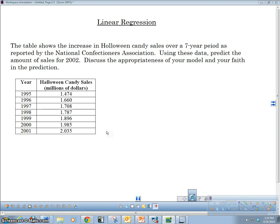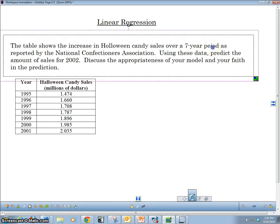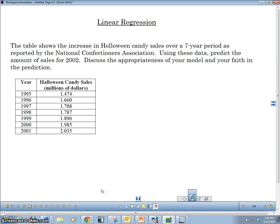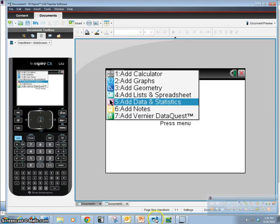So let's take a look at a problem here. The table shows the increase in Halloween candy sales over a seven year period as reported by the National Confectioners Association. Using these data, predict the amount of sales for 2002. So a lot of times what we want to do is we want to create a model using our quantitative data and we want to use that model to make a prediction. So let's go ahead and make our scatter plot and our model, which is our linear regression model, and we'll do that in our TI-Inspire.